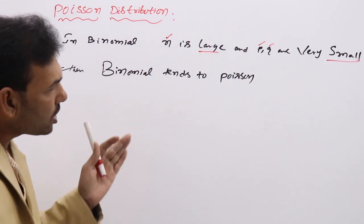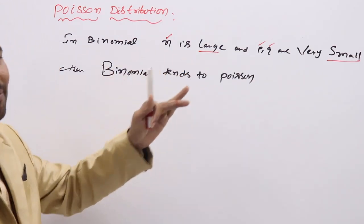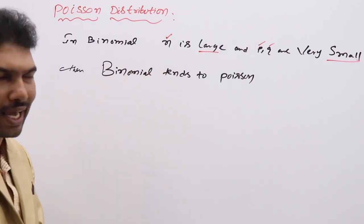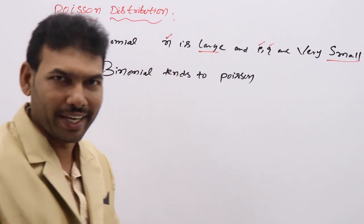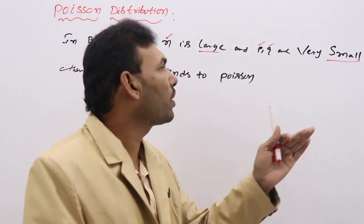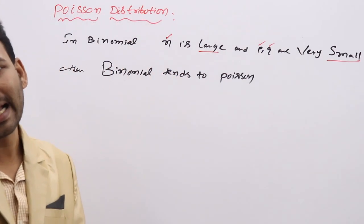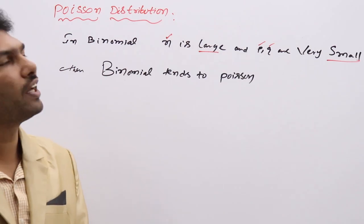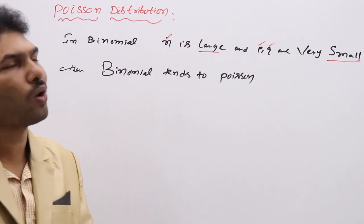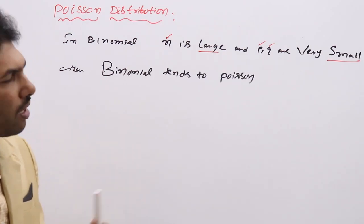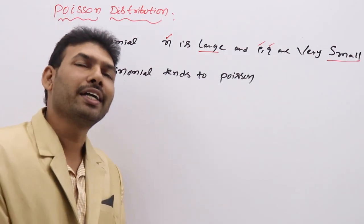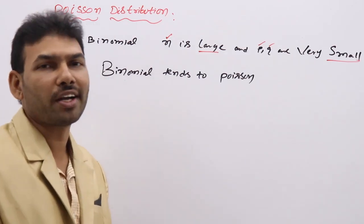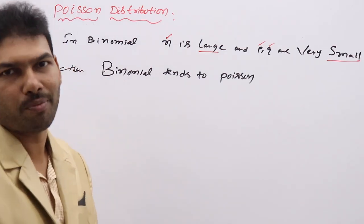The Poisson distribution is derived from binomial by taking n large — n to infinity — and p and q very small. As n tends to infinity, whenever p and q are very small, finding probabilities in binomial distribution is a little tough and it may not give accurate probabilities.